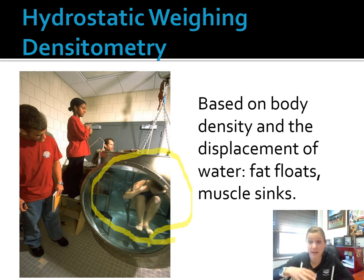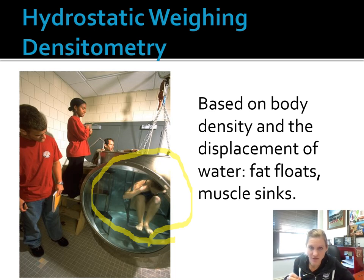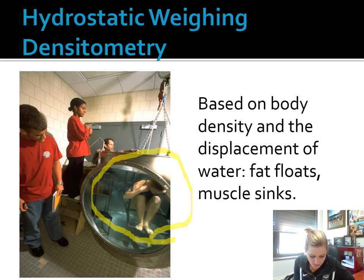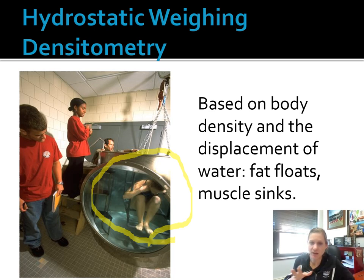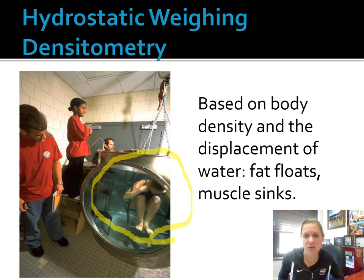Fat floats, muscle sinks. You want to weigh a lot on the scale in comparison to displacing just a little bit of water. This allows us to quantify body fat percentage based on these two principles. Lean body weight is more dense than fat — muscle weighs more than fat, so underwater it should weigh more in comparison to fat mass. Lean body weight takes up less space than fat, so less water would be displaced if you are lean or have a large amount of muscle. The more lean mass you have, the more you weigh underwater.